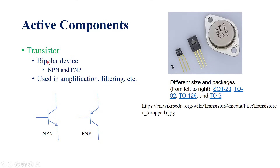The basic transistor is called a bipolar device. It is bipolar because current conduction in these transistors takes place by two types of charge carriers — one is called an electron and the other is a hole. Because the current conduction is carried out by two types of charge carriers, electrons and holes, there are two types of bipolar transistors: NPN and PNP. These transistors are used in amplification and filtering, and they have the ability to control the gain of the circuit and modulate the energy — that's why they are called active components.